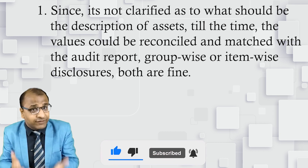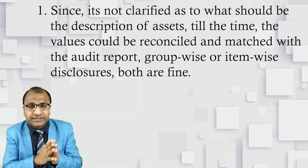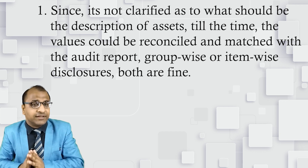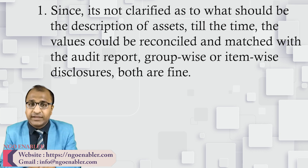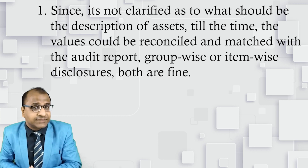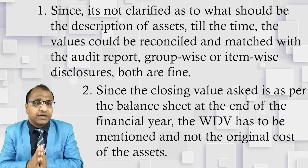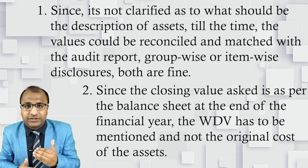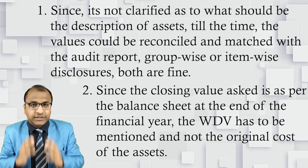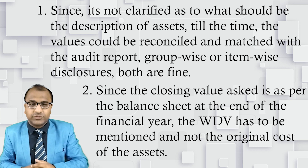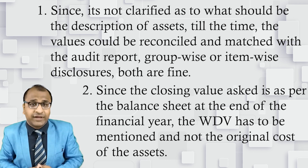However, such details can usually be found from the asset register of the organization where item-wise details are listed — or should have been listed, if at all it is maintained. Since it is not clarified as to what should be the description of the assets, both should be fine till the time the values can be reconciled and matched with the audit report. Secondly, although there is no column for depreciation, the closing value asked is as per the balance sheet at the end of the financial year, which means the WDV — that is the Written Down Value — has to be mentioned, and not the original cost of the assets, otherwise it will not match with the value reflected in the balance sheet.